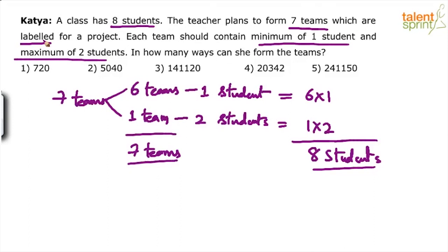But this particular question has the term 'labeled.' The teacher plans to form seven teams which are labeled, meaning they will be called team A, team B, team C, team D, team E, and so on. Some name is given to each team. The moment this naming comes into picture, it is no more a combination problem — it becomes a permutation problem, because you not only have to select the members for each team, but also arrange which person goes to which team. Student one being in team A is one case, and student one being in team B is a different case. So remember, it is a permutation case and not a combination case.